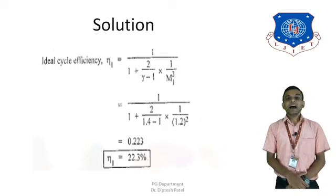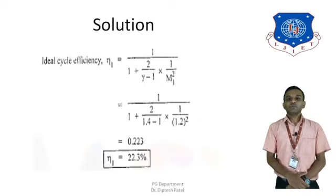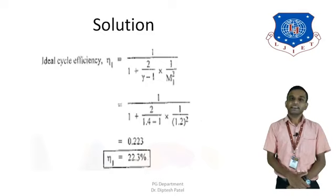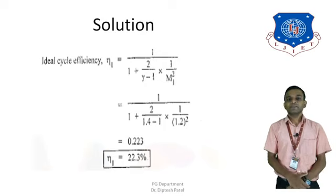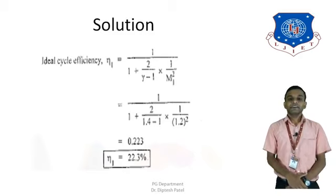Let us start with the ideal cycle efficiency, η_r. The equation is: η_r = 1 / [1 + (2 / (γ−1)) × (1 / M1²)]. Substituting the values — γ = 1.4 and M1 = 1.2 — into the equation: η_r = 1 / [1 + 2/(1.4−1) × 1/1.2²], which gives 0.223, or 22.3%. That is our first finding.